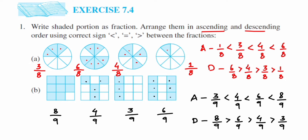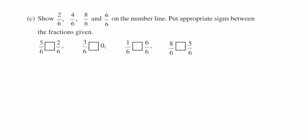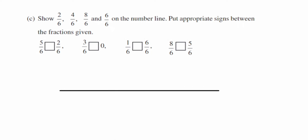Moving on to problem C, we need to show 2/6, 4/6, 8/6, and 6/6 on a number line and put appropriate signs between the fractions. Since the denominator is six, we divide the number line between zero and one into six equal parts. The proper fractions 2/6, 4/6, and 6/6 will lie between zero and one, while 8/6 is an improper fraction and will lie after one.